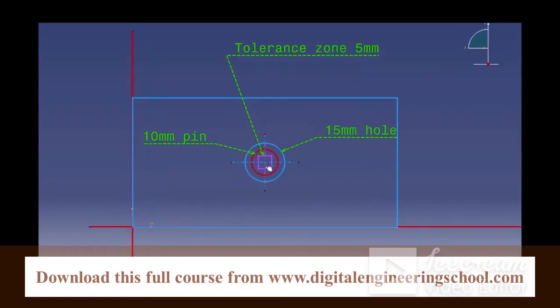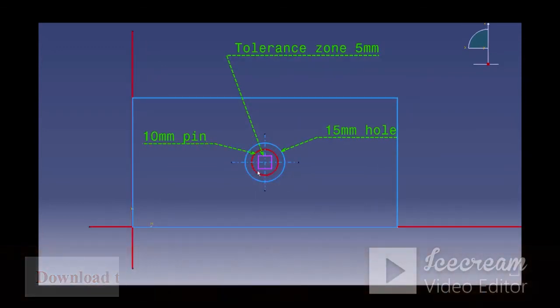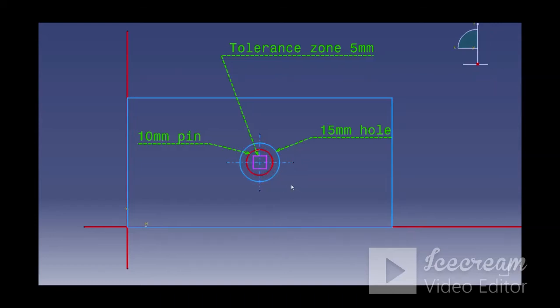We came up with this tolerance zone of 5 mm. That means if the center of the hole will lie within this tolerance it will always clear the pin. That is what we discussed a while back and now we will try to prove it. So now I will move this hole within this tolerance zone and let us see if this clears this pin or not.